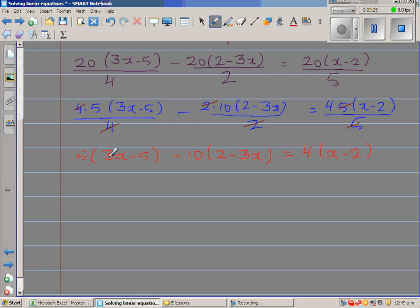So let us expand this. So this is 5 times 3x is 15x. 5 times negative 5 is minus 25. Now when you come here be super careful multiplying by negative 10. So negative 10 times 2 is negative 20. And this is where most of you can go wrong. Negative 10 times negative 3 is plus 30x. Is equal to 4x minus 8.